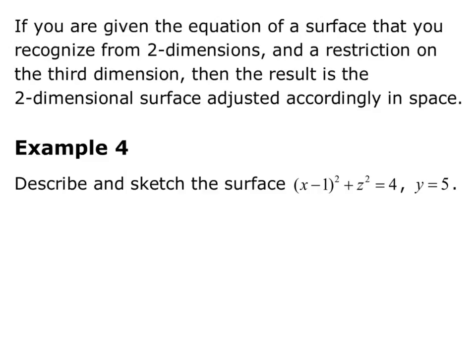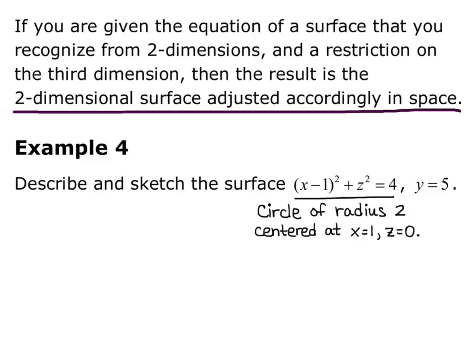The next type of surface: if you're given the equation of a surface that you recognize from two dimensions and a restriction on the third dimension, then the result is the two-dimensional surface adjusted accordingly in space. Example 4 says describe and sketch the surface: quantity x minus 1 quantity squared plus z squared equals 4, and y equals 5. We're given the restriction y equals 5 and the circle x minus 1 squared plus z squared equals 4. So we know this is a circle of radius 2, centered at x equals 1, z equals 0.